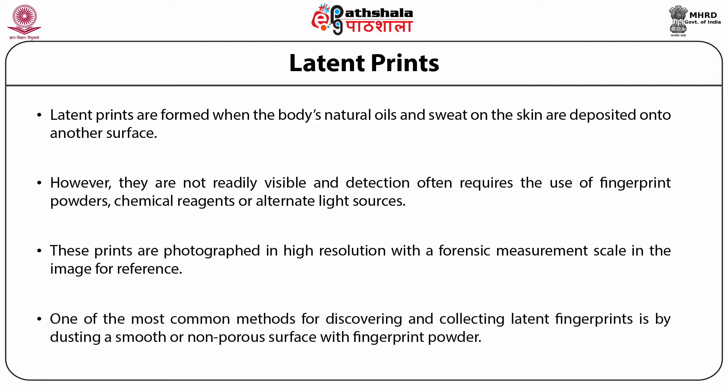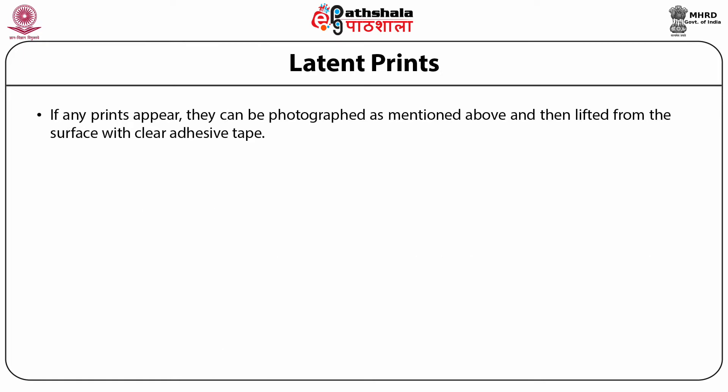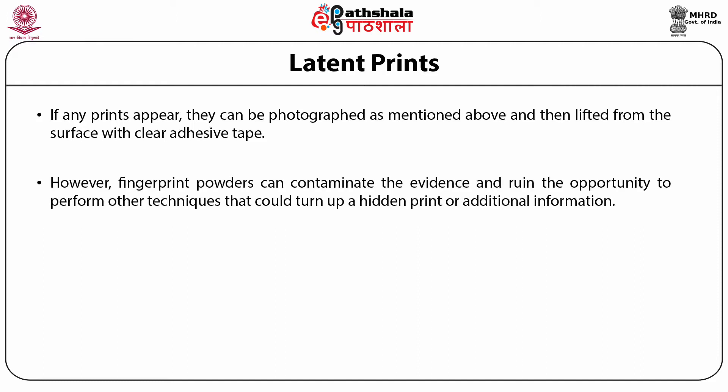One of the most common methods for discovering and collecting latent fingerprints is by dusting a smooth or non-porous surface with fingerprint powder such as black granular, aluminum flake and black magnetic powder. If any prints appear, they can be photographed and then lifted from the surface with clear adhesive tape. The lifting tape is then placed on a latent lift card to preserve the print. However, fingerprint powders can contaminate the evidence, so investigators may first examine the area with an alternate light source or apply cyanoacrylate, i.e., super glue, before using powders.